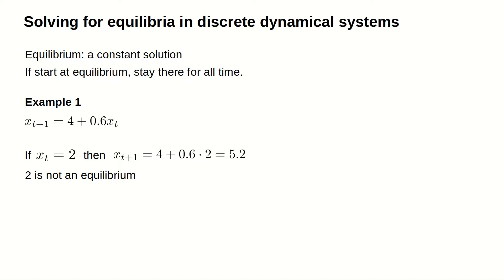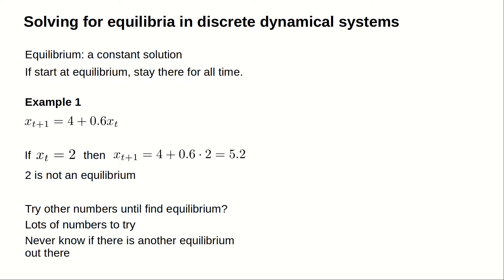Now, we could go ahead and try plugging in lots of different numbers and hope that eventually we find the value of the equilibrium. But there are a lot of numbers out there, and it might take a long time until we find the right one. And even if we found one equilibrium, how do we know if that is the only one? Maybe the dynamical system has two equilibria or even more equilibria.